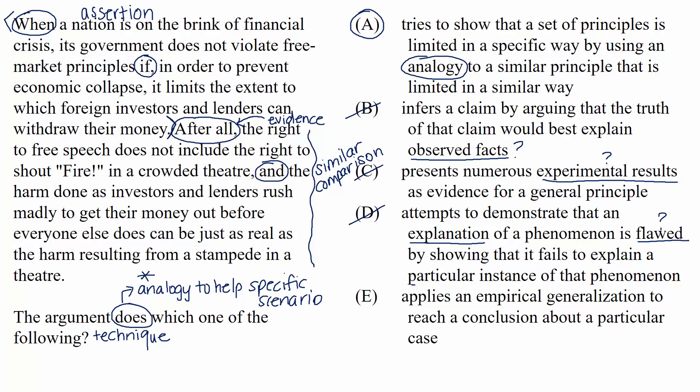Finally, E says that the argument applies an empirical generalization to reach a conclusion about a particular case. Again, let's unpack this. Even if you aren't quite sure what the exact definition of an empirical generalization is, you can ask yourself if this argument does reach a conclusion about a particular case. No, it doesn't. There is no discussion of any specific cases, but rather a discussion of general principles. Therefore, we can rule out this choice based on that alone.